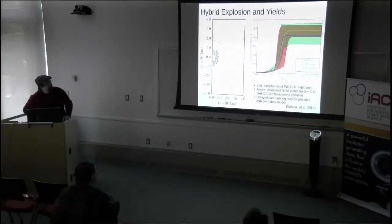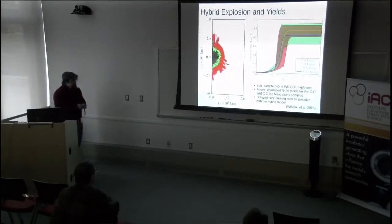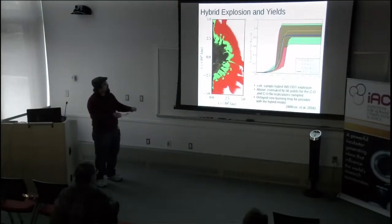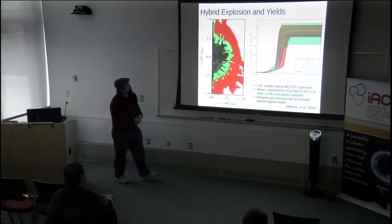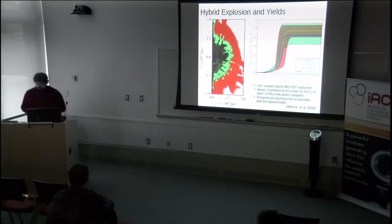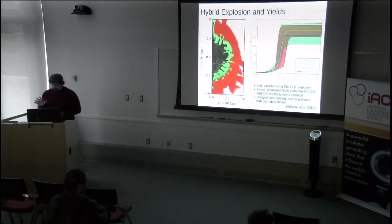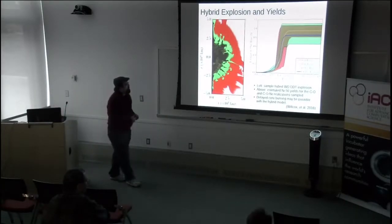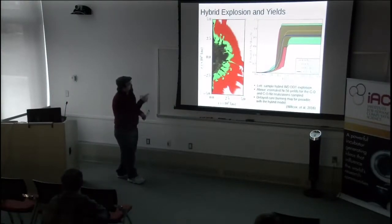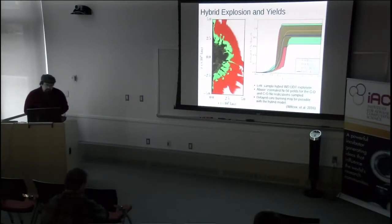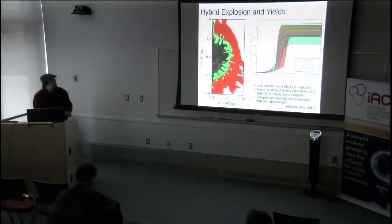In the explosion visualization, colors are progress variables specifying the degree of burning: white means no burning, red means some carbon has burned into ash, green indicates material burning in a slow quasi-statistical equilibrium with silicon and calcium and similarly massed elements, and black indicates nuclear statistical equilibrium where composition is mostly helium, iron, nickel, and iron-peak elements.